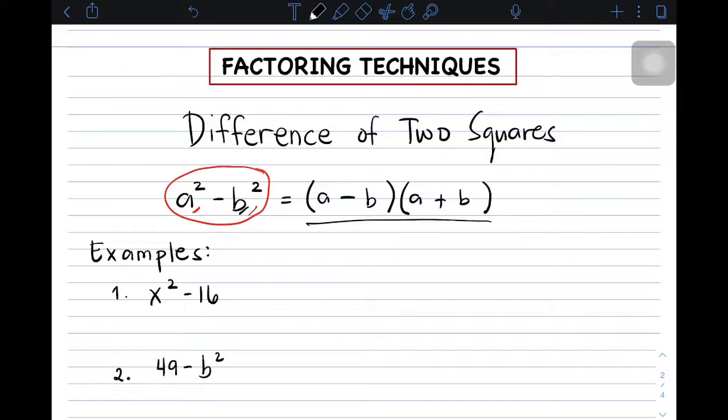I have here five examples. For the first example, we have x squared minus 16. Basically, you need to know first whether the two terms are perfect square. Yung first term natin, x squared, is a perfect square, as well as the second term, 16. So, set up natin yung ating factors. Square root ng x squared is x. At yung square root ng 16 is 4. So, pwede niyong gawin, this is positive and this is negative, pwede rin naman siyang negative and positive. So, ganun lang mag-factor ng example number 1.